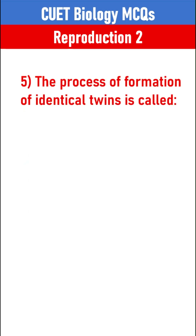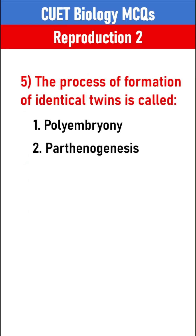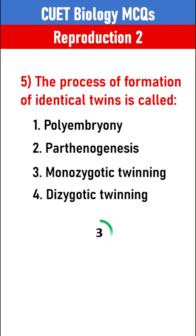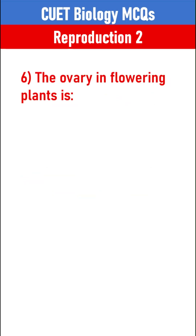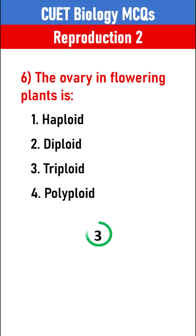The process of formation of identical twins is called Monozygotic twinning. The ovary in flowering plants is Diploid.